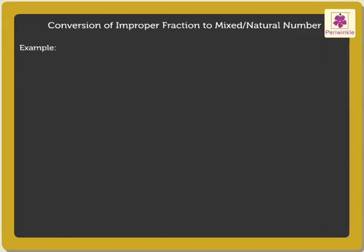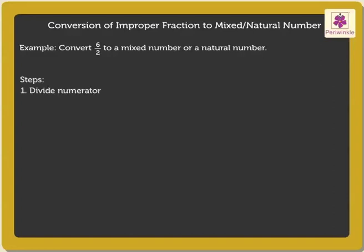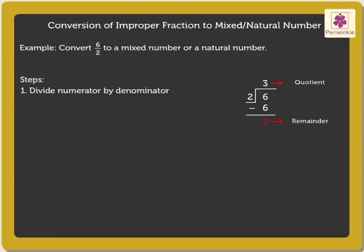Example 1. Convert 6 upon 2 into a mixed number or a natural number. Step 1: Divide the numerator by the denominator. On dividing the numerator 6 by denominator 2, we get the quotient as 3 and the remainder as 0.